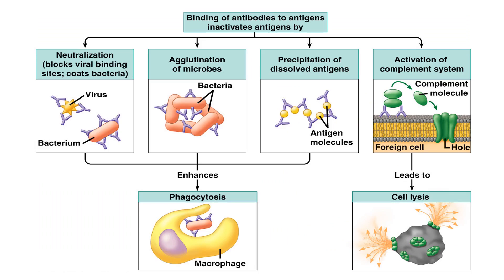They can lead to neutralization — that is, the blocking of viral binding sites. The antibodies block the virus or bacteria and will not allow it to enter into the cell; they block their site so that it cannot enter. This is regarding neutralization. Then there is agglutination: in agglutination, the particulate matter is clumped together, and antibodies bind with them so the bacteria cannot function further.